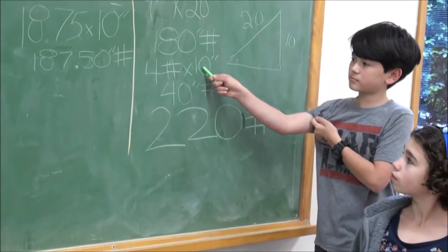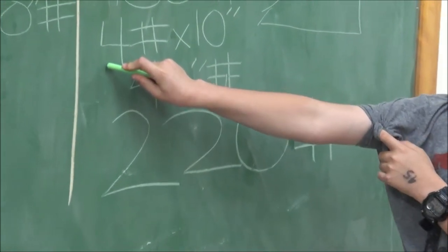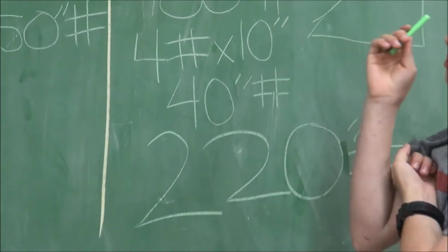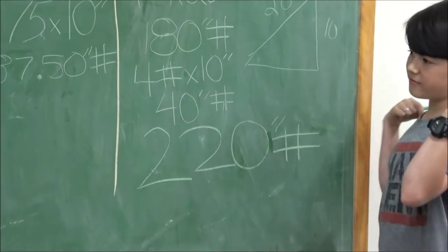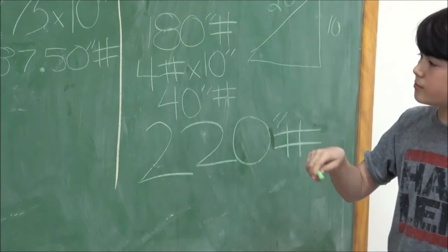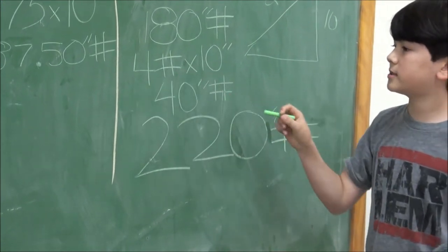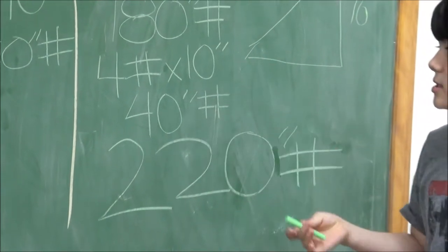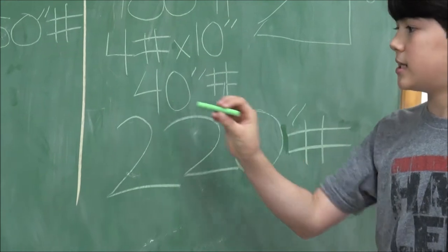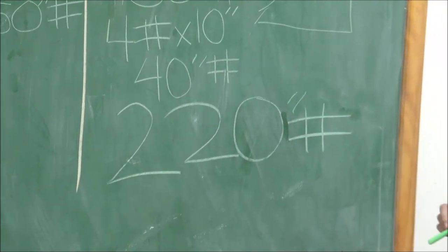And the weight is 4 pounds. So, if the boom weighs 4 pounds and the distance is 10 inches, 4 times 10 is 40, so the answer is 40 inch pounds.